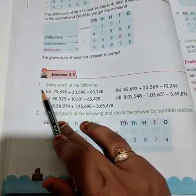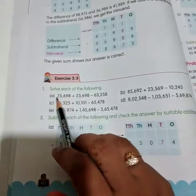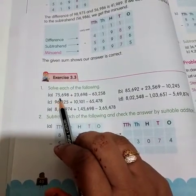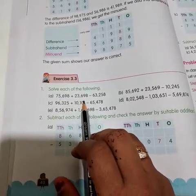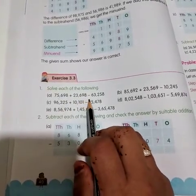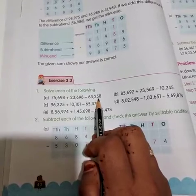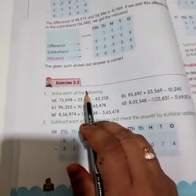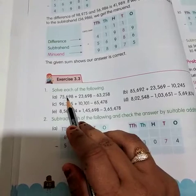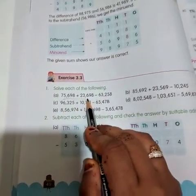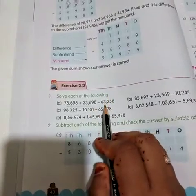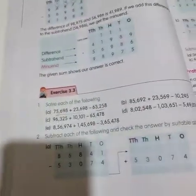What is the first bit here? Solve each of the following. What is the first question they have given here? 75,698 plus 23,698 minus 63,258. So what exactly are they asking? They are saying firstly we have to add these 2 numbers. Whatever result we will get, we have to subtract with this number. Let us do this.